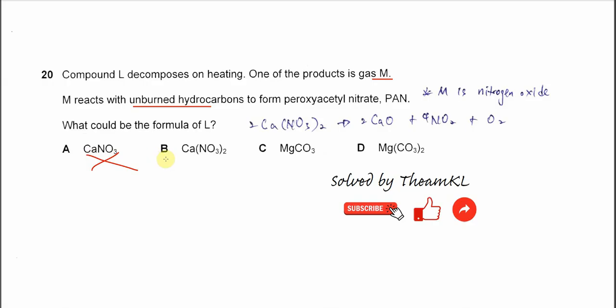For B we have calcium nitrate. When calcium nitrate decomposes it will form calcium oxide and NO2. So the NO2 can further react with the unburnt hydrocarbon to form this PAN. So the answer is B.